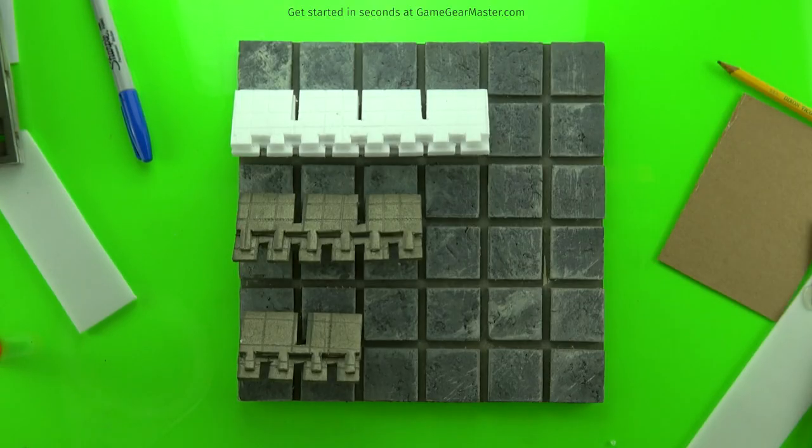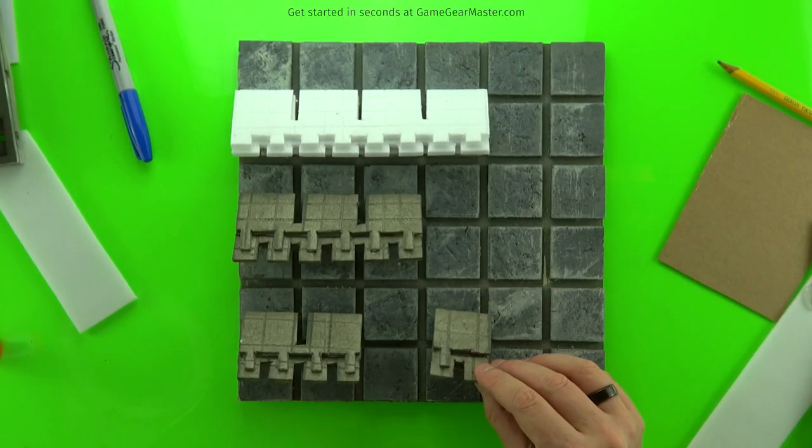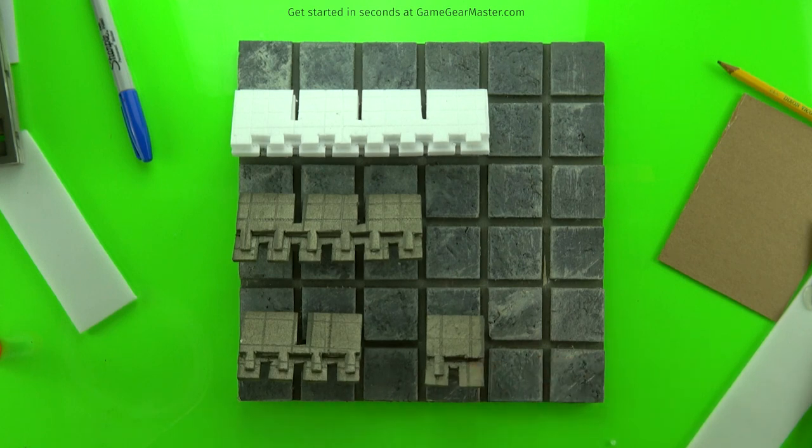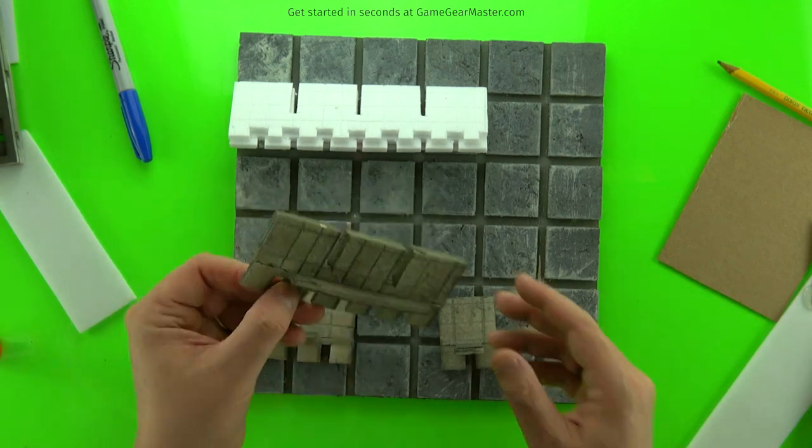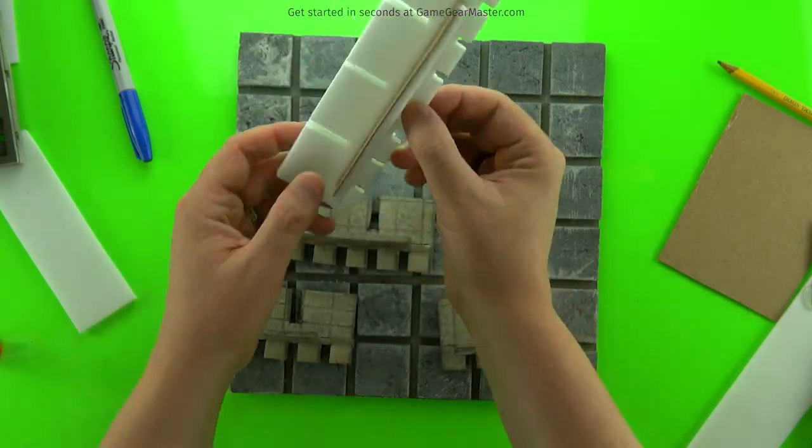So we see here to make crenellations of different widths, you just cut them in between those arrow slits there, the arrow slits and the crenellations. You're just going to cut in the middle of those to make crenellations that are one, two, three, or four grid squares wide.